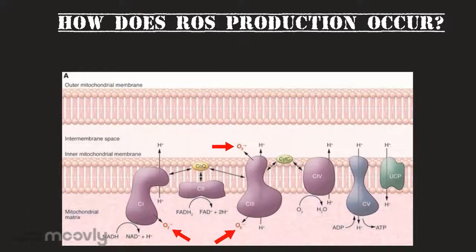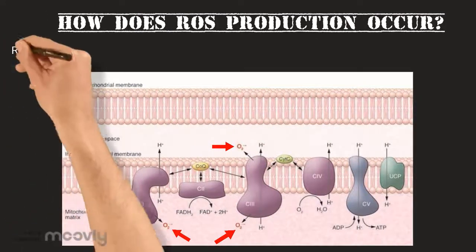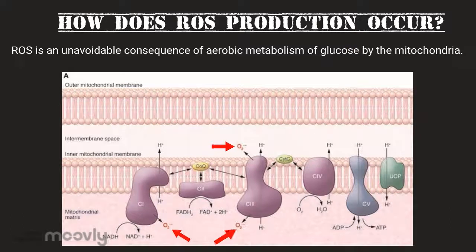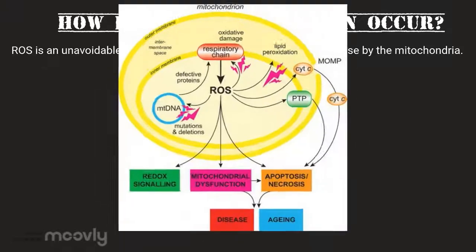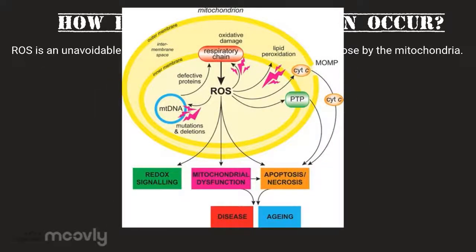How does ROS production occur? ROS is an unavoidable consequence of aerobic metabolism of glucose by the mitochondria. They are partially reduced metabolites of molecular oxygen, generated as products of metabolic reactions or as byproducts of various cellular processes.